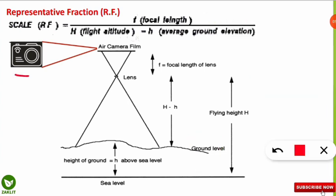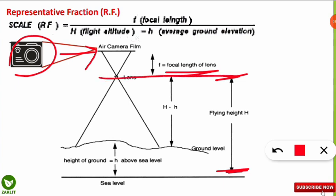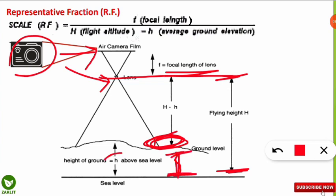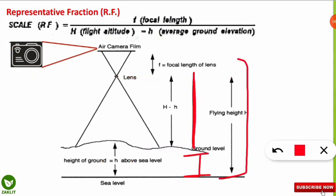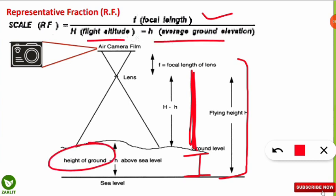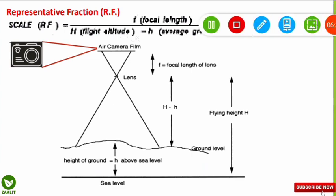As shown in the diagram, the camera is located above the ground and has its focal length. The camera flies at a certain height above sea level, and to take a picture of the ground surface, we subtract the ground height above sea level (small h) from the total flying altitude (capital H). This gives only the height relevant for the formula. So the final formula for scale or RF value is: focal length divided by (H minus h), where h is the ground elevation above sea level.